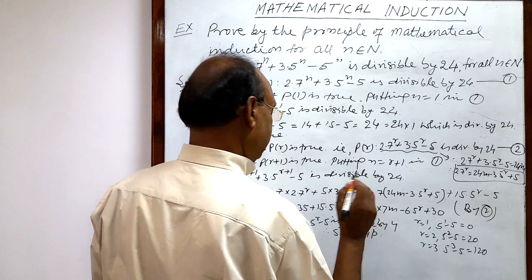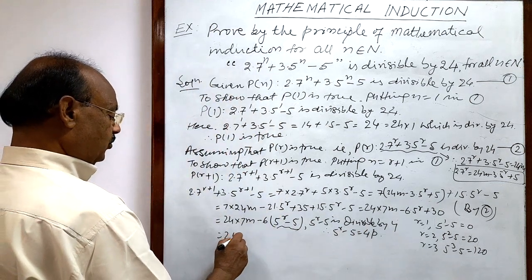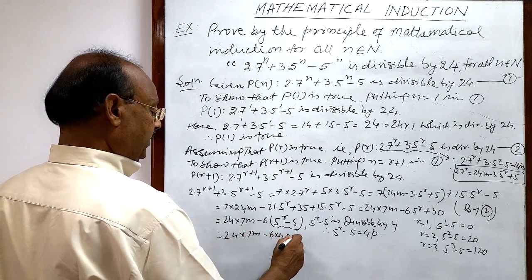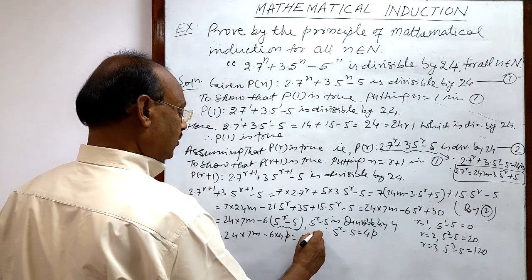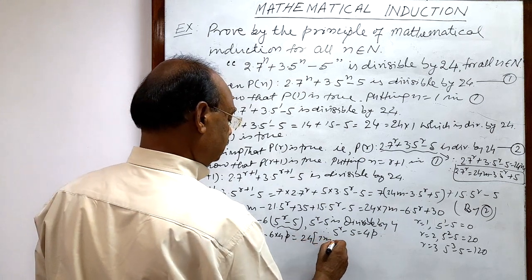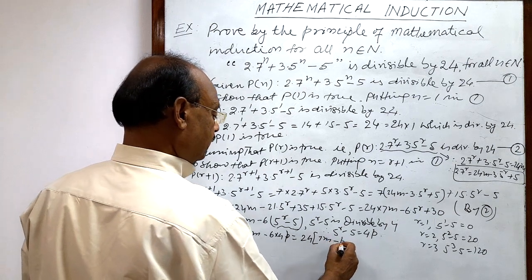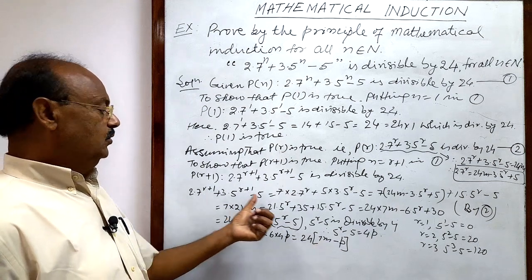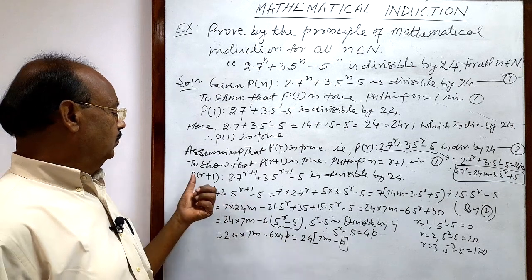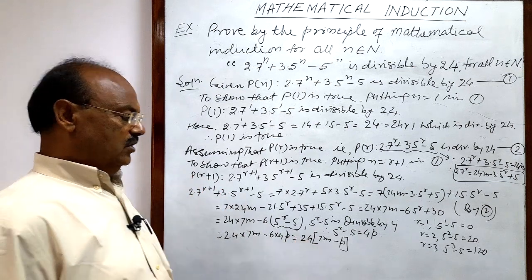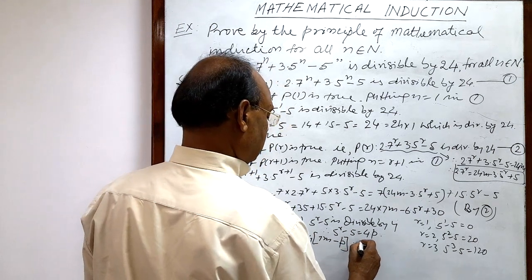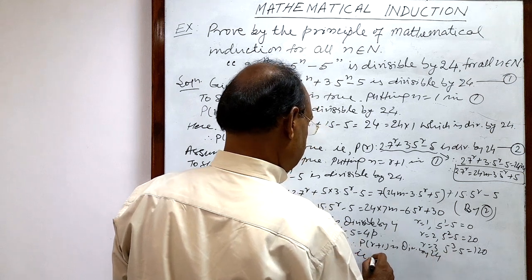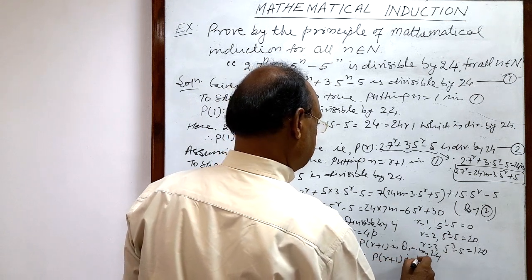Substituting, we get 24·7m - 6·4p = 24·7m - 24p = 24·(7m - p). Since 24 is a factor of this expression, this is divisible by 24. Therefore P(r+1) is divisible by 24, which means P(r+1) is true.